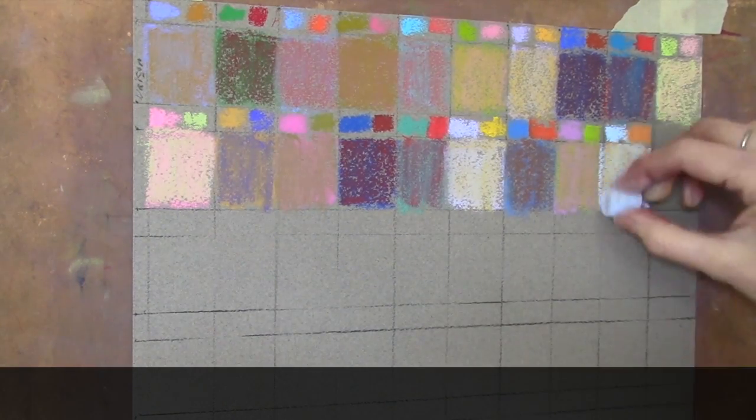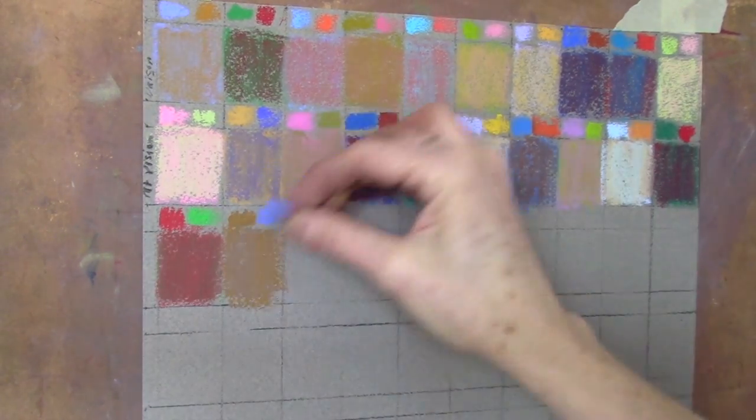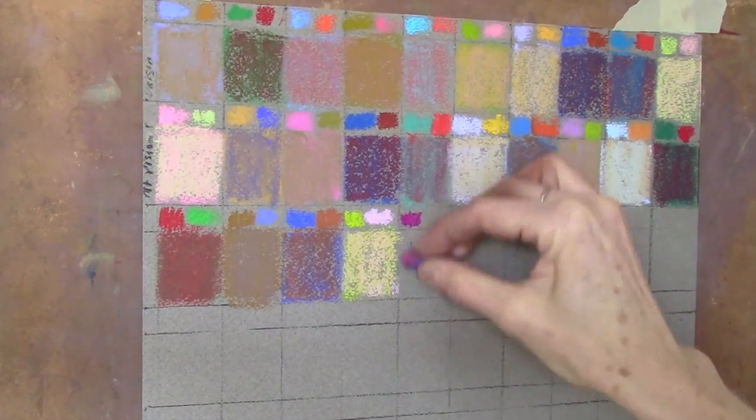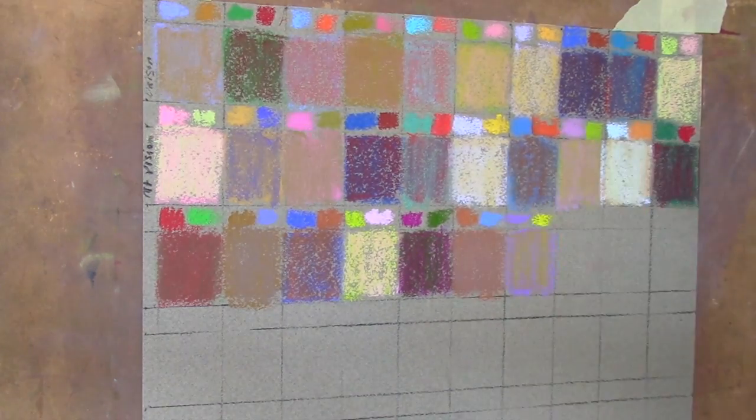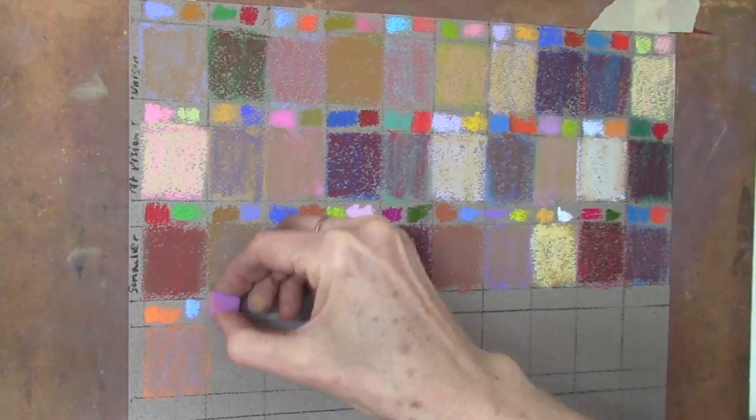And so you can see how bright—I put the original colors above so you can see how intense those colors are—but when they're layered, they are muted and greyed.